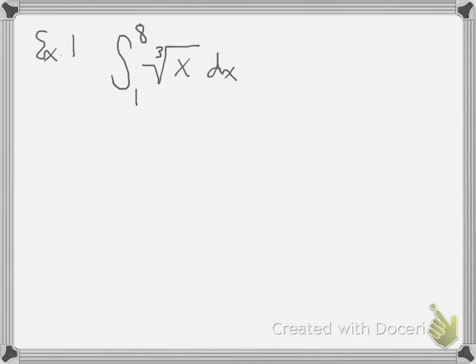So let's apply this theorem. Our first example is the definite integral from 1 to 8 of the cube root of x. As the evaluation theorem tells us, we need to find an antiderivative of the cube root of x, then plug in 8, plug in 1, and their difference is the result. It would be wise to pause the video and try those steps yourself. The way I suggest is to first rewrite the integrand, the cube root of x, in terms of a fractional exponent — x to the one-third power.